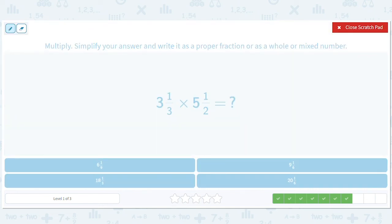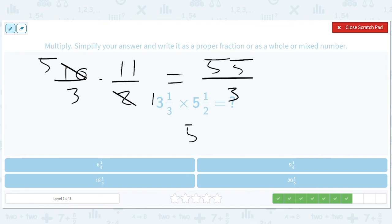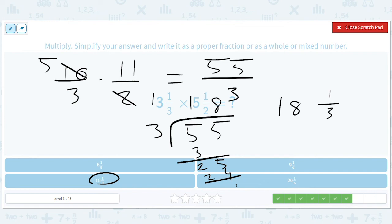So this is going to be ten-thirds times eleven halves. That'll be a five, that'll be a one. This will give us fifty-five over three. So we have fifty-five divided by three. This is one, twenty-five, eight, twenty-four. So eighteen and one-third.